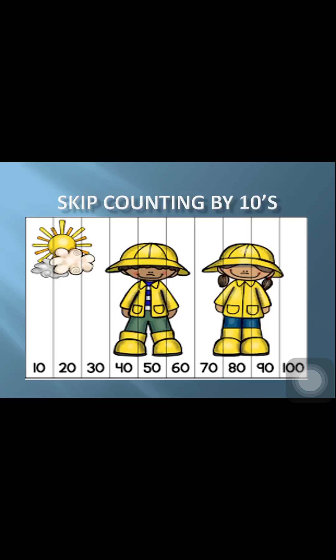Today, inshallah, we will take skip counting by ten. What is the meaning of skip counting by tens? We count each time ten. If I have zero and I add 10, it will be 10. Add more 10, it will be 20. 20 plus 10 equals 30, 30 plus 10 equals 40, 40 plus 10 equals 50, 50 plus 10 equals 60, 60 plus 10 equals 70, 70 plus 10 equals 80, 80 plus 10 equals 90, 90 plus 10 equals 100.